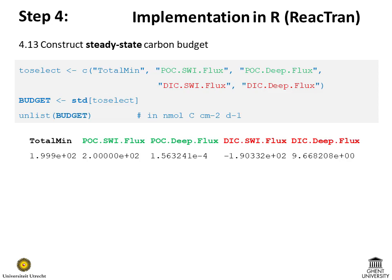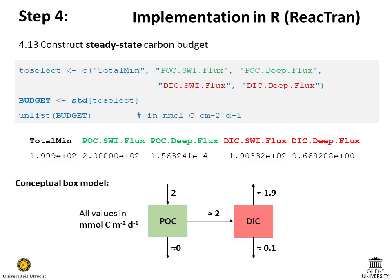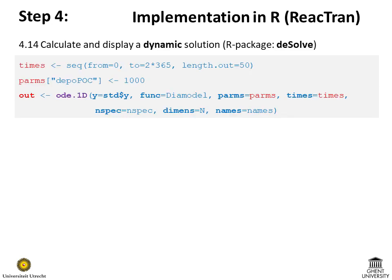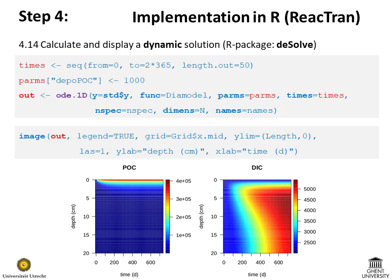Using the depth-integrated process rates and the fluxes at the domain boundaries, we can construct a total carbon budget for the sediment column, depicted in a conceptual diagram. If the mass balances in the model are correct, the incoming and outgoing fluxes for each component should add up to zero. The deSolve package, loaded together with the reactran package, offers functions for calculating dynamic solutions. For a one-dimensional model, dynamic solutions are found using the ode1d function, and the result can be displayed as an image with time on the x-axis, depth on the y-axis, and concentrations shown in colors.